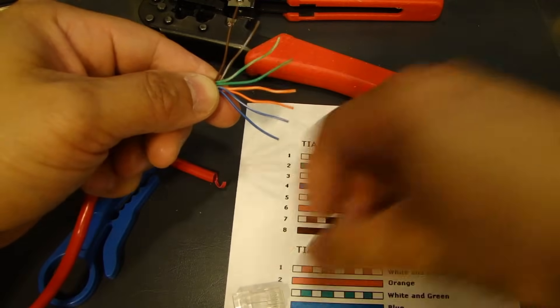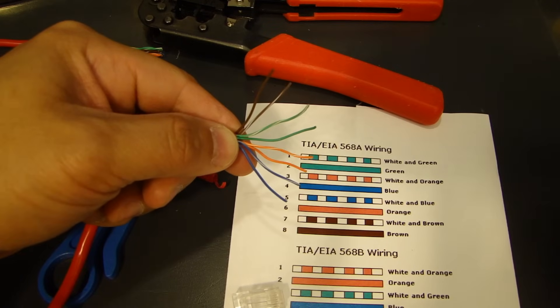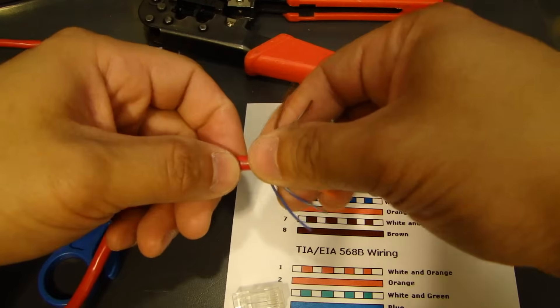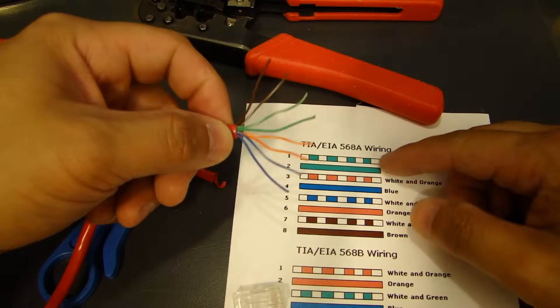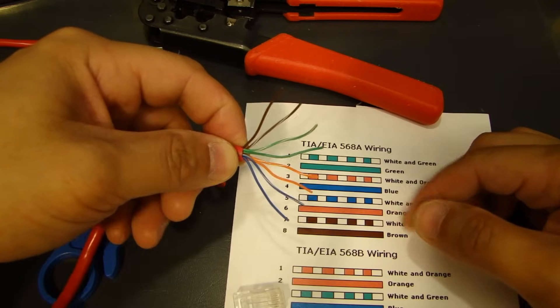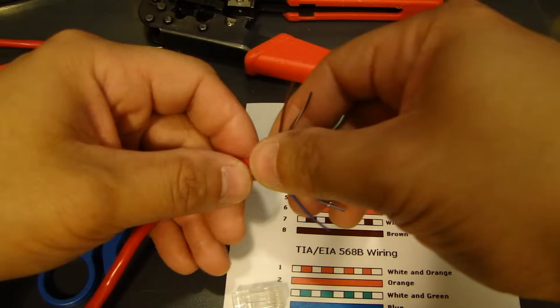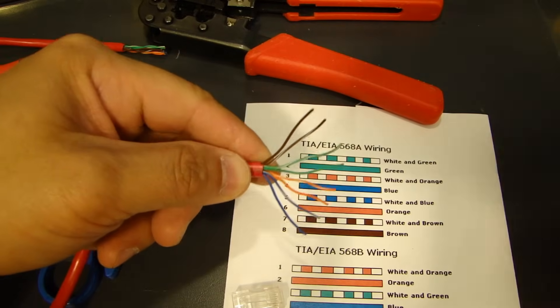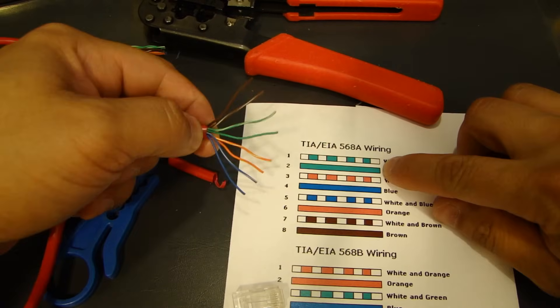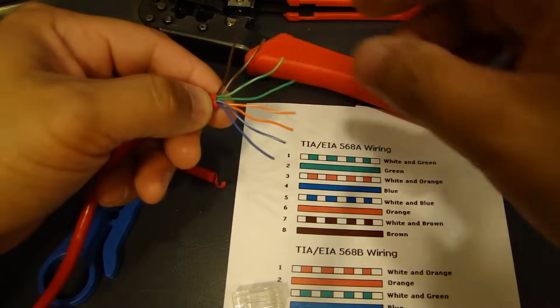Let's start with this one side. On this cable, I'm going to go ahead and do one end is going to be your 568A pinout. And on the other end, I'm going to do the 568B pinout. So, this will become a crossover cable.